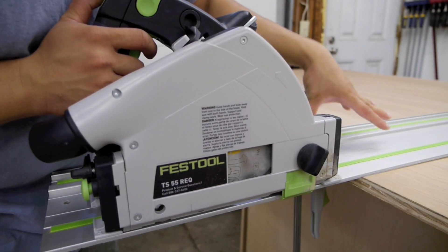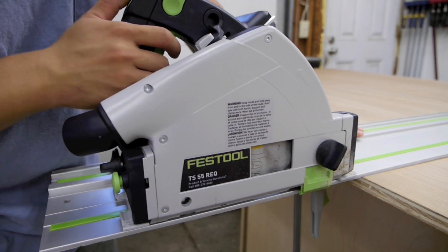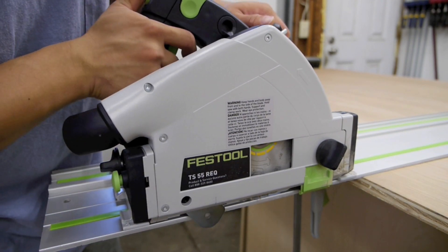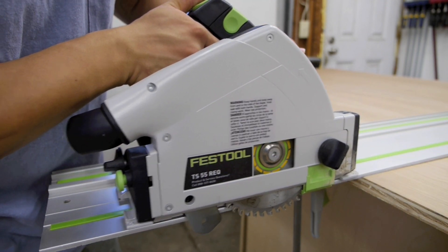So the reason I like using the FS1900 guide rail is that it gives me more than enough room here to safely plunge down and then cut forward.